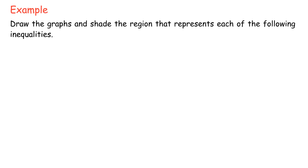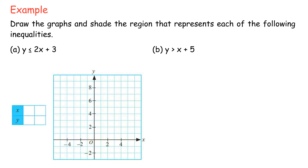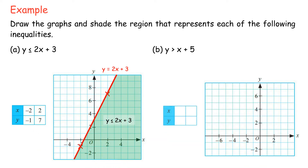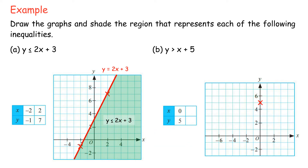Example: Draw the graphs and shade the region that represents each of the following inequalities. a) y less than or equal to 2x plus 3. b) y greater than x plus 5. Solution: For a, find two points to draw a straight line. y equals 2x plus 3: when x equals negative 2, y equals negative 1; when x equals 2, y equals 7. For b, y equals x plus 5: when x equals 0, y equals 5; when x equals negative 5, y equals 0.